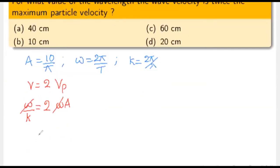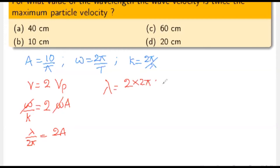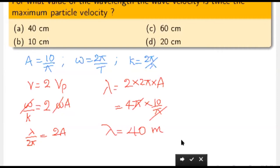Since the particle performs simple harmonic motion, the maximum particle velocity is ω × A, and wave velocity v = ω/k. So ω/k = 2ωA, meaning 1/k = 2A, thus k = 1/(2A). Substituting k = 2π/λ gives λ/(2π) = 2A, so λ = 4πA = 4π × (10/π) = 40 meters. Option A is correct.